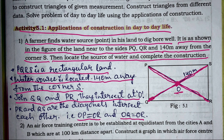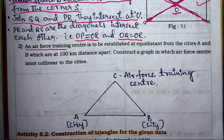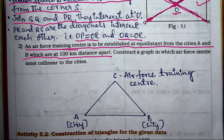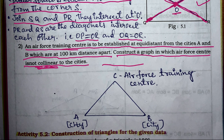Next question: an air force training center is to be established at equidistance from the cities A and B, which are 100 kilometers apart. Construct a graph in which the air force center is not collinear to the cities. Collinear means the points are in the same line; not collinear means those points are not in the same line.